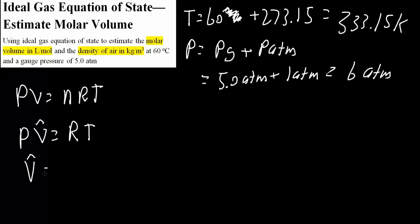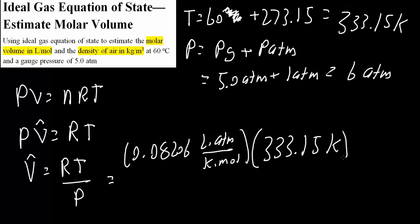V molar equals RT divided by P. So R is 0.08206 L atm per K mol, just a constant, times temperature, which is 333.15 Kelvins, divided by pressure, which we said was 6 atmospheres.